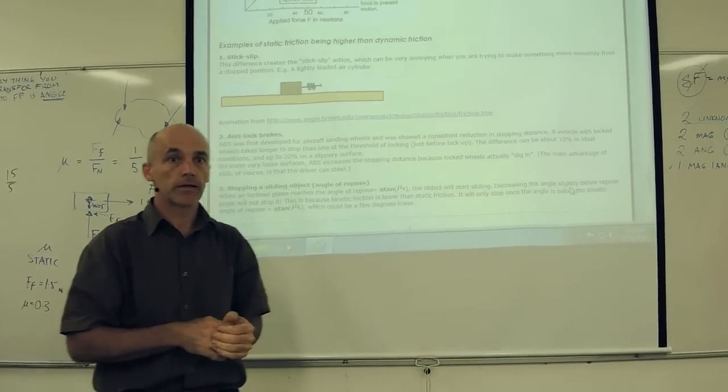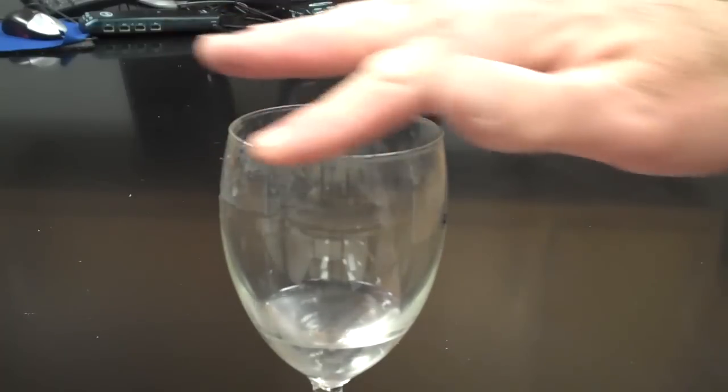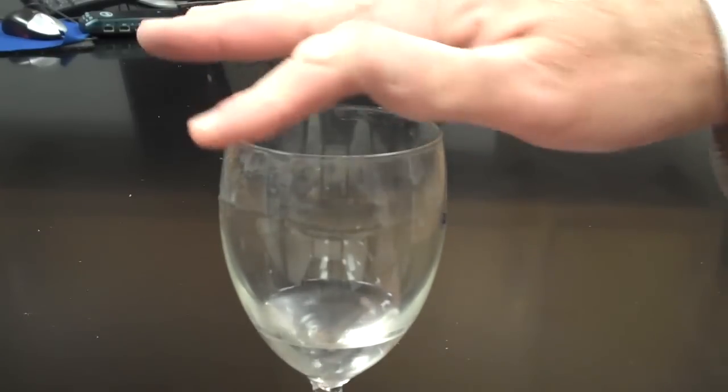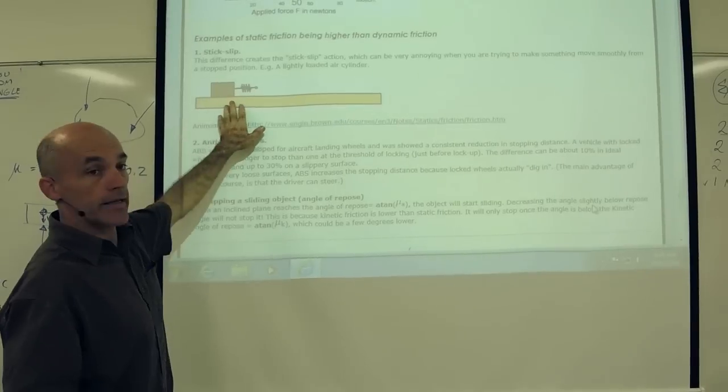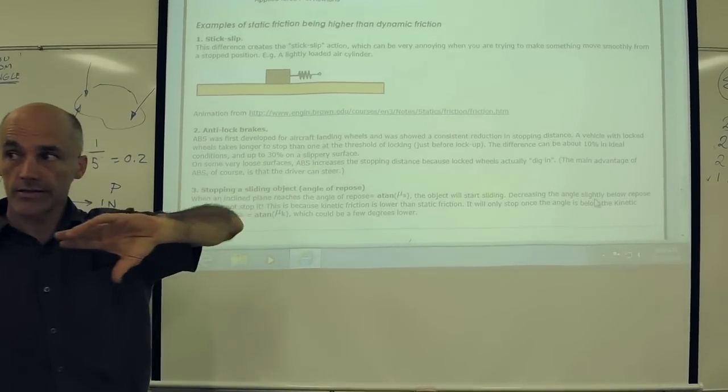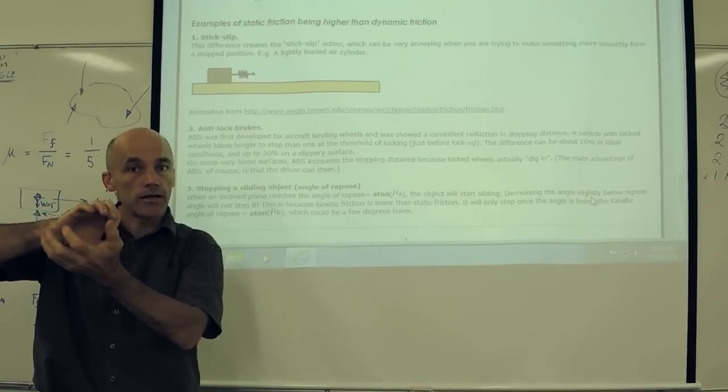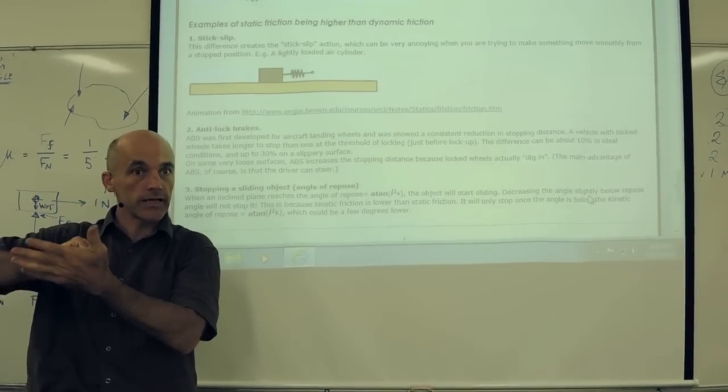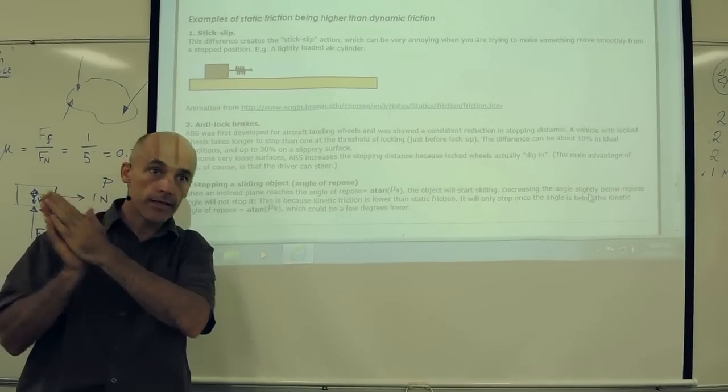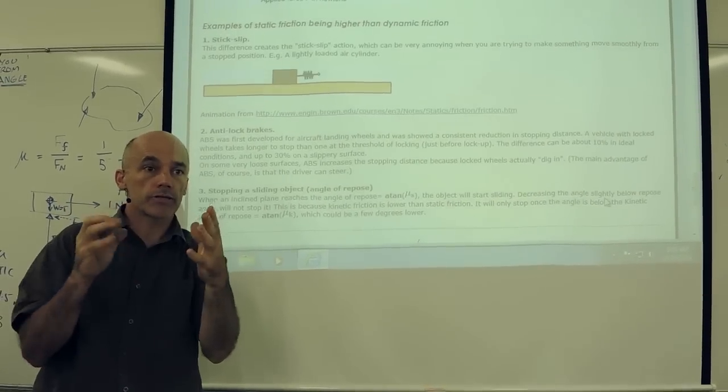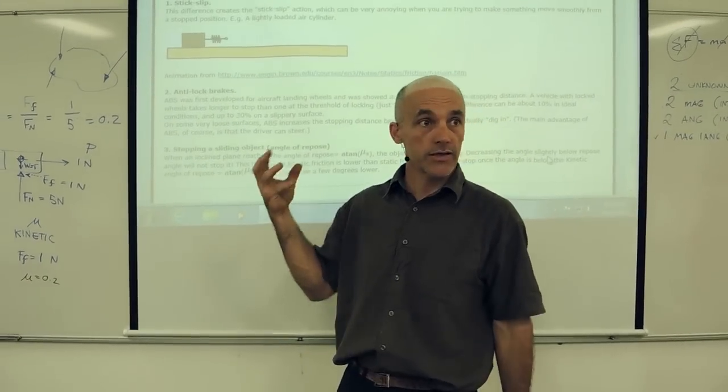Another example of stick-slip would be an air cylinder, maybe a low-pressure air cylinder, and the rubber seal, which is like an O-ring inside, has static friction against the cylinder. Then the air pressure increases, the static friction suddenly breaks away and it moves, and now the air pressure is lowered a little bit and it stops again. Just like this.